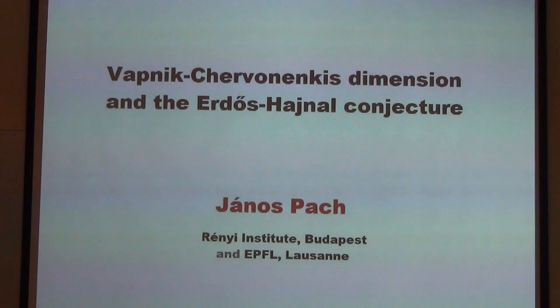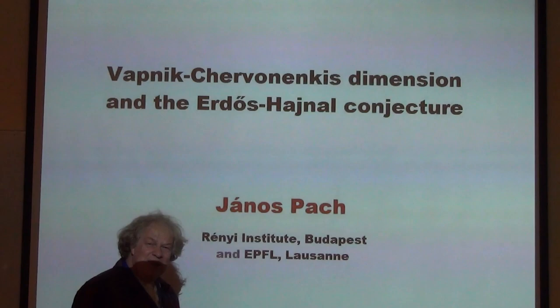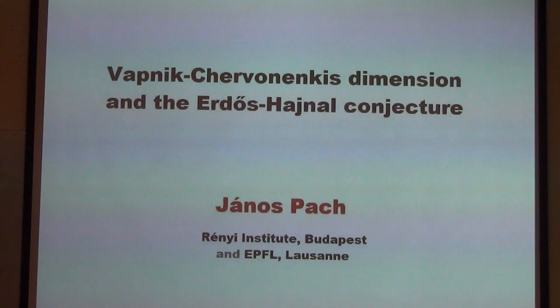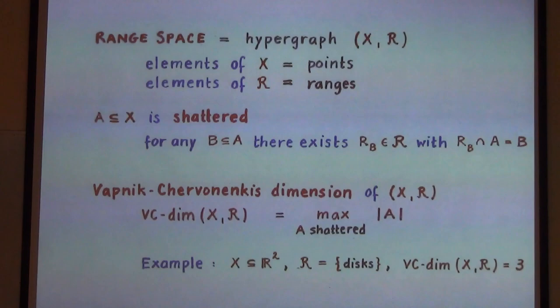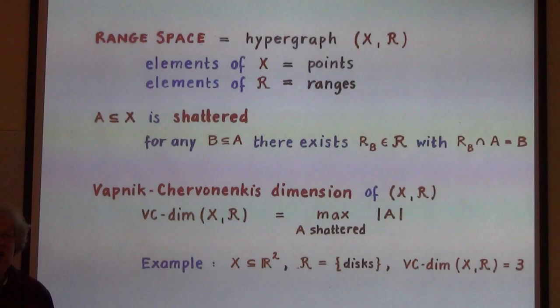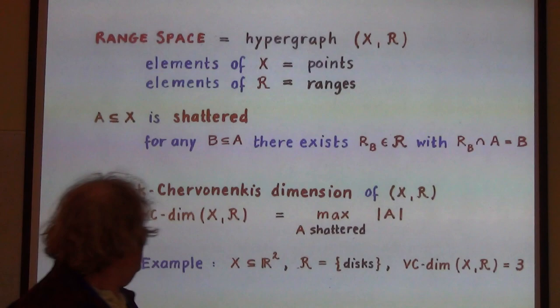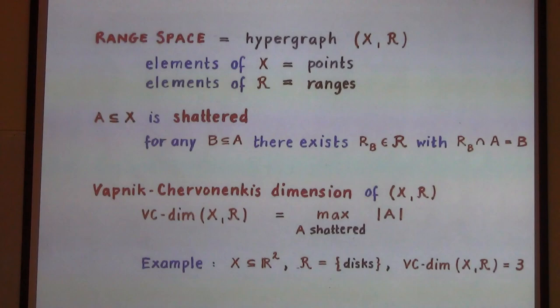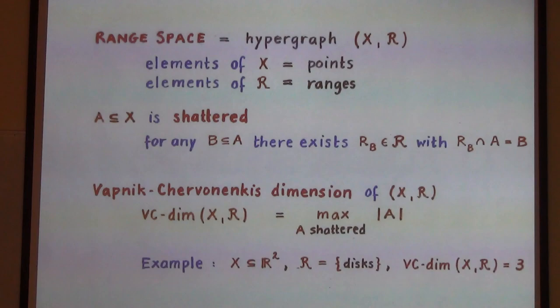I'm very happy that some students from the master course on algorithmic methods in geometry are here, because not completely accidentally we covered these definitions yesterday. In the language from where the notion comes, hypergraphs are called range spaces. They are really what we think they should be: we have an underlying set and a number of subsets of this underlying set. The underlying set is denoted X. The subsets we call ranges. So we have a certain number of ranges — hyperedges.